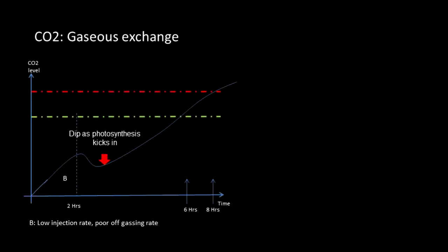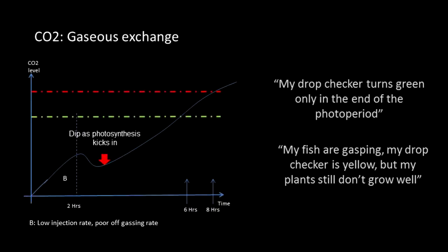This group of people who have poor gaseous exchange in their tanks can thus face an odd scenario where they have fish gasping at the end or middle of the photo period, but their tanks are still not getting enough CO2 for most of the day. A tank with high injection rate and high off-gassing mechanism avoids this issue as the higher injection rate faces less fluctuations from plant photosynthesis as the light kicks on.